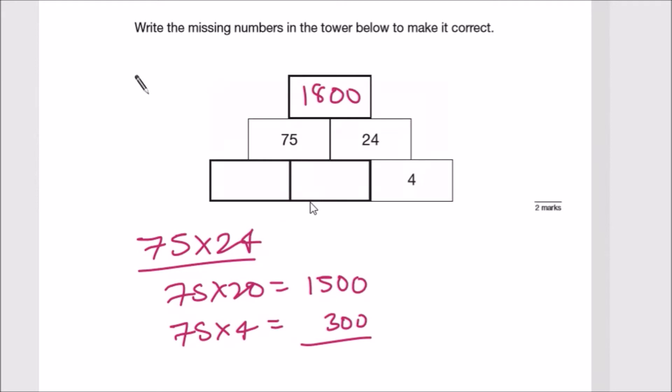To get the number below, something times 4 is 24. If we're good at times tables, it should be 6, otherwise 24 over 4 is 6.